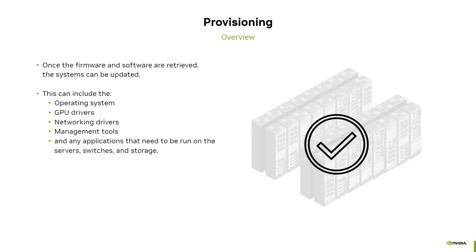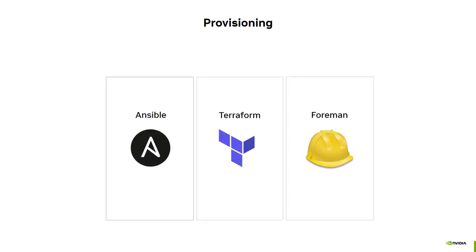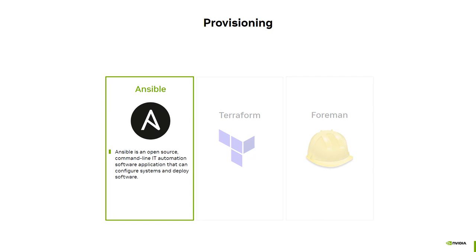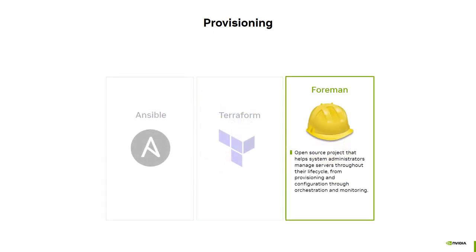The process can also include updating firmware for the hardware. When provisioning is complete, the compute nodes, GPUs, storage, and networking should be ready for workloads to be run on the system. There are several tools available for provisioning servers and systems. Ansible is an open-source, command-line IT automation software application that can configure systems and deploy software. Terraform is an infrastructure as code tool that lets you define both cloud and on-prem resources. Foreman is an open-source project that helps system administrators manage servers throughout their lifecycle from provisioning and configuration to orchestration and monitoring. In addition, there are many other tools for on-prem and cloud-based provisioning and configuration.